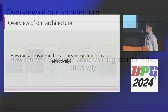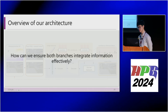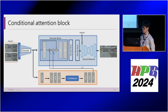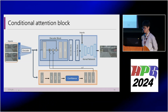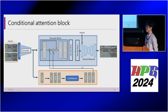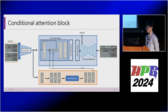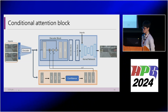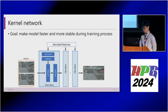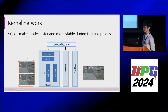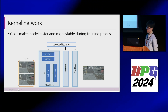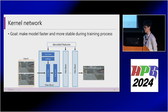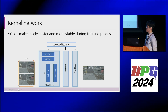The critical question is how to ensure both branches integrate information effectively. The output of the predictor branch — the confidence — is passed through several MLP layers and then through the reconstruction branch, ensuring reconstruction is based on prediction. The reconstruction doesn't predict RGB directly; decoded features pass through a kernel network to reconstruct the final result. The kernel network predicts 3x3 filters via 1x1 convolution and softmax, and the final RGB is computed by passing the input through those filters, making training faster and more stable.